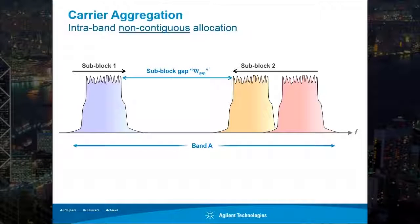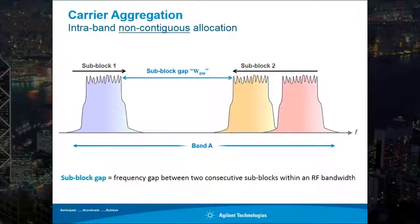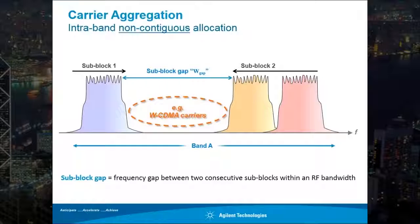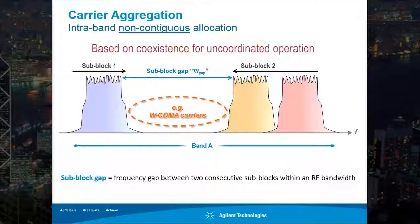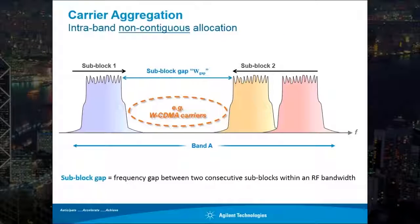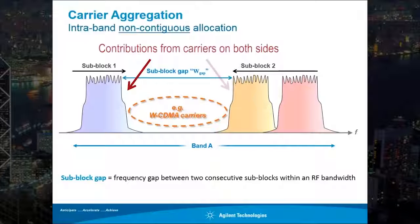Here's an example of non-contiguous carrier aggregation with a sub-block gap. The sub-block gap is the frequency gap between two consecutive sub-blocks within an RF bandwidth. The spectrum in the sub-block gap can be occupied by other service providers, perhaps deploying other technologies such as wideband CDMA. So the new base station RF requirements within the sub-block gap are based on coexistence for uncoordinated operation. The cumulative ACLR and the cumulative spectrum emission mask measurements are defined within the sub-block gap, and the challenge is that you have to take into account contributions from carriers on both sides of the sub-block gap.